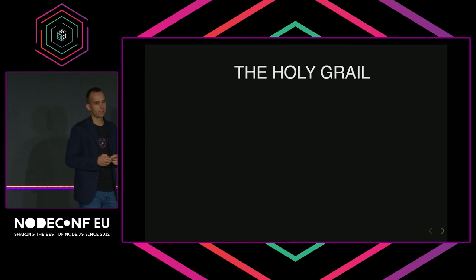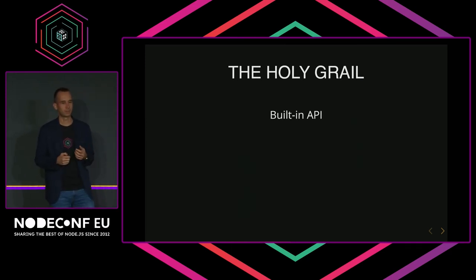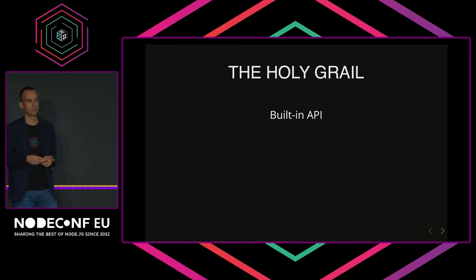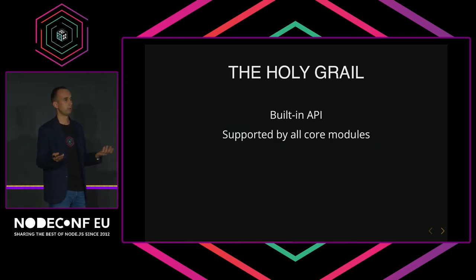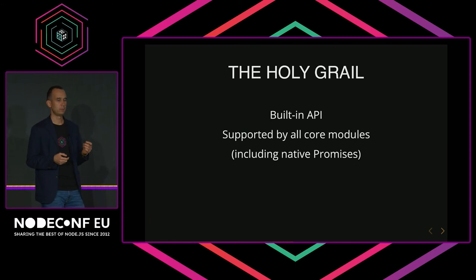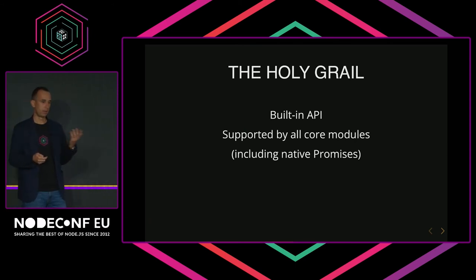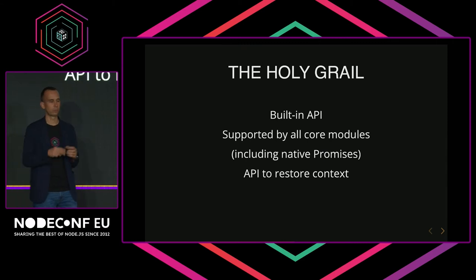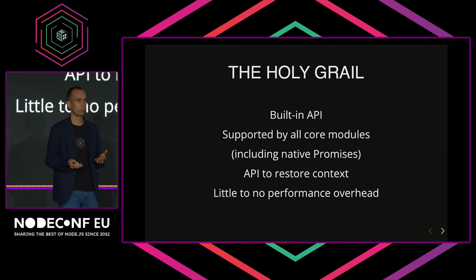Now the question is: what do we actually want? I'd like to define the holy grail, which is five things. First, we want this API to be built in — because if there were many NPM packages implementing the same functionality, then connection pool libraries like the PG client wouldn't know which to support. It should be supported by all Node.js core modules, like the HTTP module. And very importantly, it needs to be supported by native promises — this used to be a big issue for many years. Next, we want an API to restore context, so that if you're implementing a connection pool or a task queue library like Bluebird, you can tell Node.js core how to restore context for a callback. And finally, we want good performance — we don't want to slow down Node.js by 50% just because we added support for context propagation.